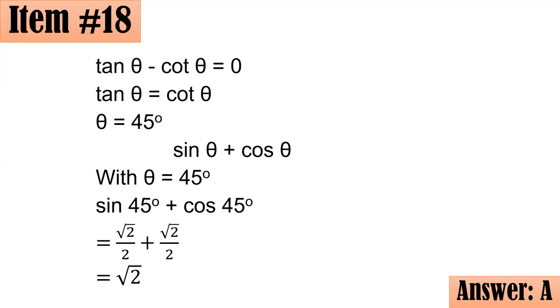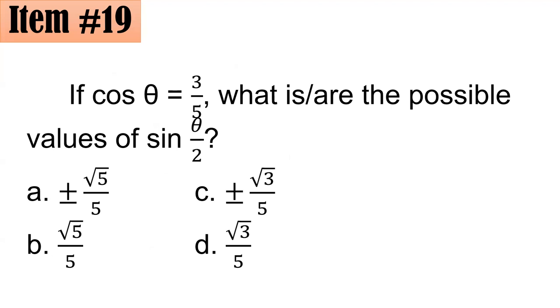Number 19. If cosine theta equals three fifths, what is or are the possible values of sine theta over 2? Is it A plus minus square root of 5 all over 5, B square root of 5 over 5, C plus minus square root of 3 over 5, or D square root of 3 over 5? Letter A naman daw.